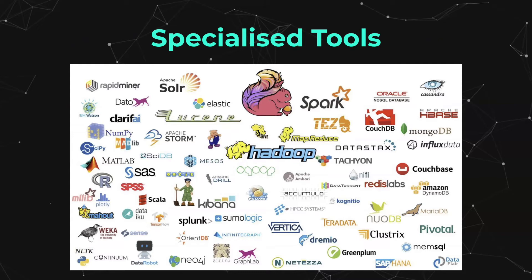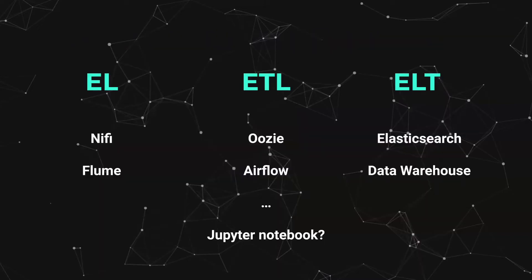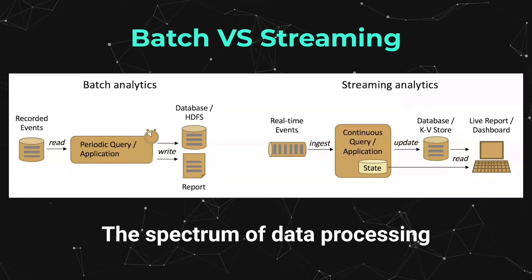There are a broad range of tools that will be useful for different contexts. For example, for EL you have NiFi or Flume; for ETL you have Oozie and Airflow; for ELT you have Elasticsearch, et cetera. So there's a broad range of different tools just in the ETL space, and this then starts opening up some of the discussions that appear in the stream processing perspective.